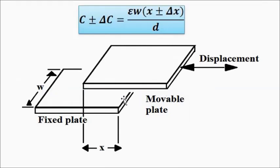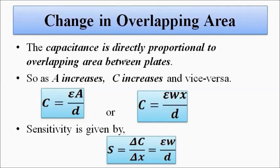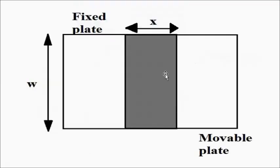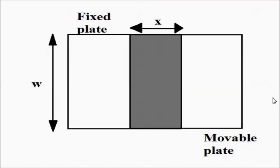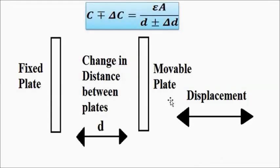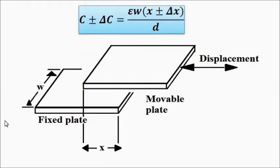When there is lateral or sidewise movement, there will be a change in the overlapping area. In that case, capacitance is directly proportional to the overlapping area: as area increases capacitance increases, and when area decreases capacitance decreases. The plate can be connected to the diaphragm so there is lateral movement contributing to a change in overlapping area, or connected so there is a change in distance between the plates.